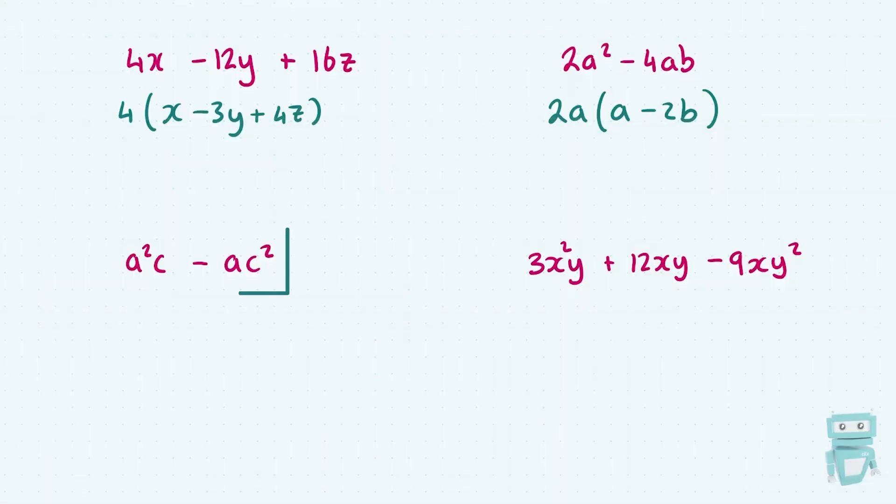Next up, I have a squared c minus ac squared. And if this gets a bit confusing, you absolutely can write it out as a times a times c minus a times c times c. And I'm going to look across these two terms and say, what do they have in common? Well, both of them have a single a, and both of them have a single c in common.